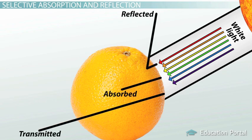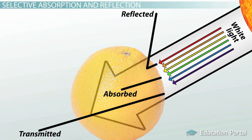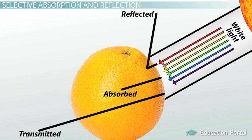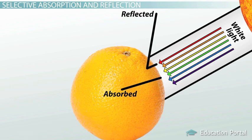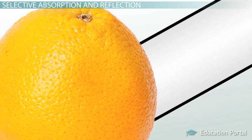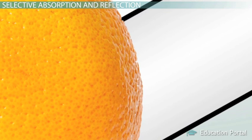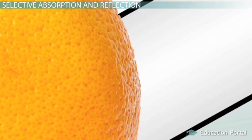We know that none of the light waves are transmitted through the orange. If they were, then the orange would appear transparent. Since we can't see through oranges, that means they are opaque, and that means all the light must be reflected or absorbed. Absorption of a light wave occurs through resonance. When the frequency of a light wave matches the resonant frequency of an object, then the object vibrates at that frequency. The energy of the light wave stays in that object as thermal or vibrational energy.